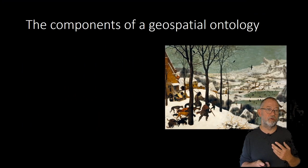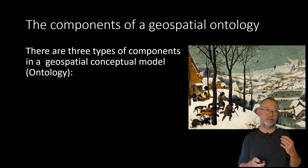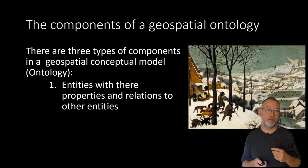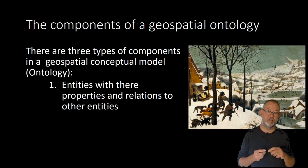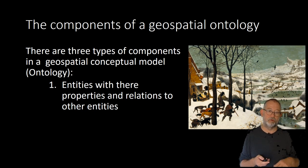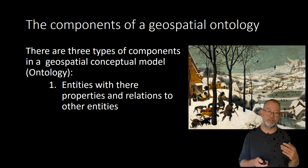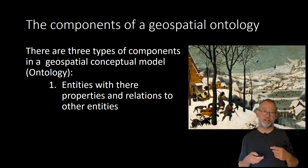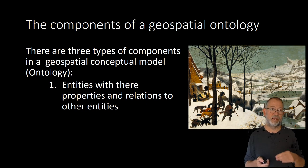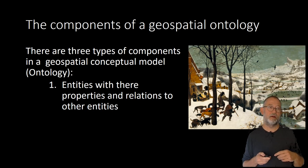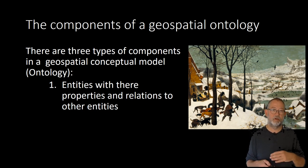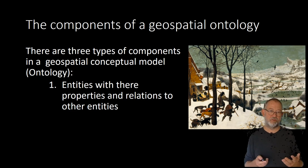First of all, there are three components in a geospatial conceptual model or ontology. First, there are entities, and these entities have properties. The entities are typically things like buildings, trees, people, or lakes. A building could have a use — the building in the foreground is a pub or inn, that one is a church, and there's a water mill. So the use would be a property of the building. Entities could also have relations to other entities — a water mill can be next to a stream.